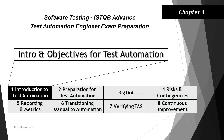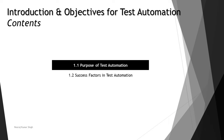Hello friends and greetings for the day. Welcome to the very first tutorial of ISTQB Advanced Test Automation Engineer. We are getting started with chapter one, which is the introduction to objectives and introduction to test automation. In this chapter we will be having two topics: the purpose of test automation and success factors in test automation. Let's get started with the very first topic of this series — the purpose of test automation.